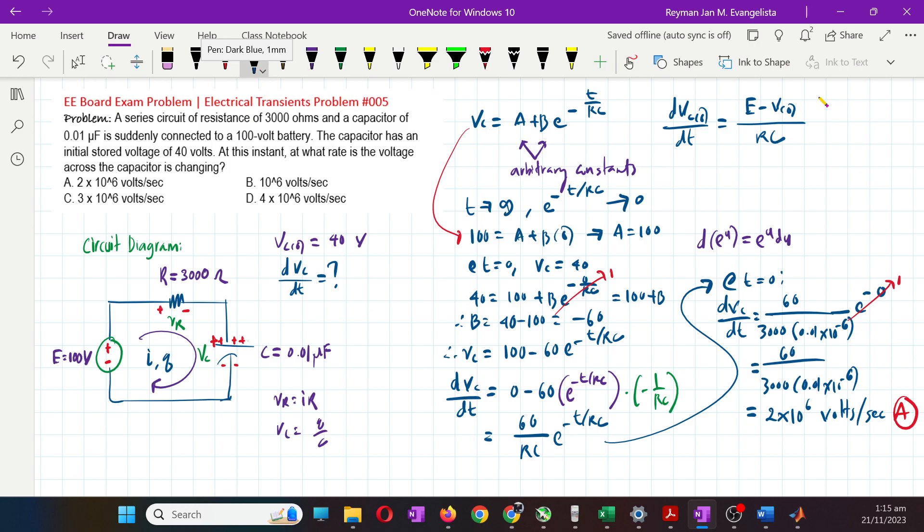RC is the time constant, and E minus Vc sub 0 is the difference between the supply and the initial voltage on the capacitor. For me, I prefer not to usually forget this method. That's it, thank you for watching.